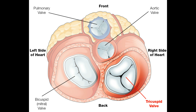The fourth wall is the pulmonary wall, also called the semilunar wall, located at the entry of the pulmonary artery. During ventricular relaxation, it prevents blood from moving from the pulmonary trunk into the right ventricle.